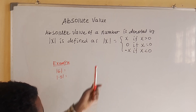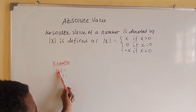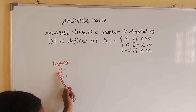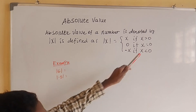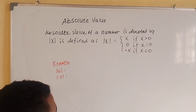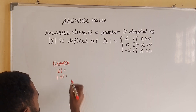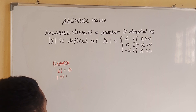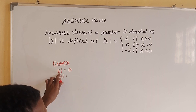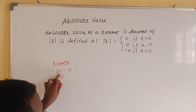When x is equal to 6, the number x equals 6. Since x is greater than 0, the absolute value is positive — so the absolute value of x equals 6, which is equal to 6, because x is greater than zero.